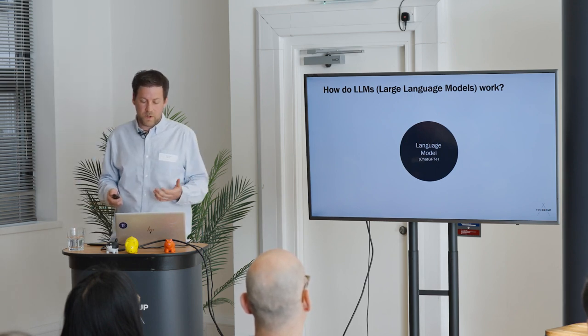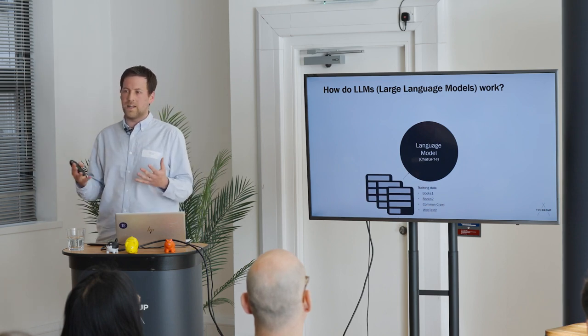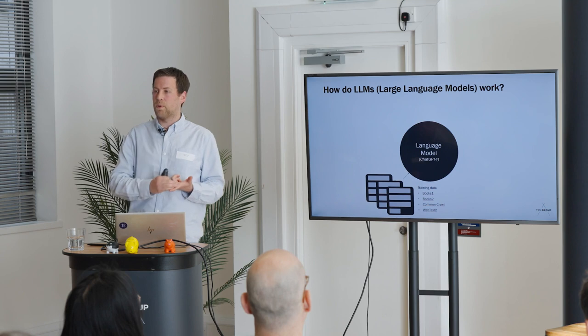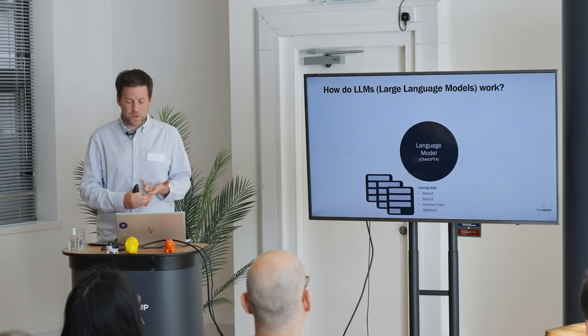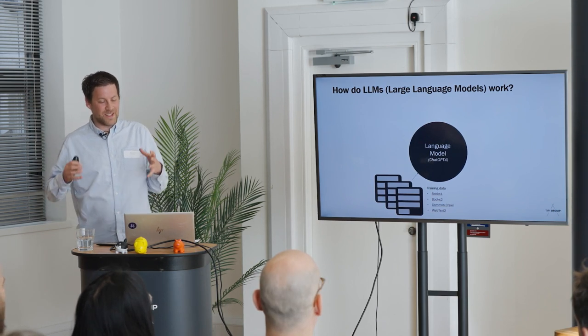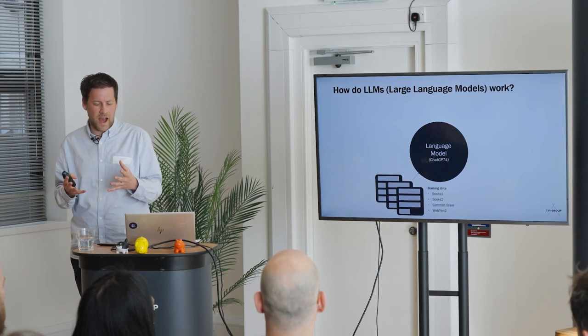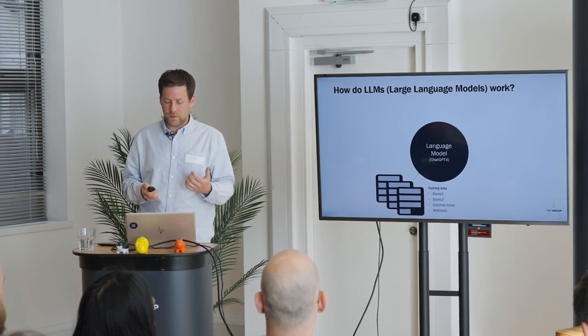A large language model has been trained by training data. It's taken a huge amount of data, which is a combination of books that have been scanned in, crawls of web pages, and a popular one is WebText2 — everything from Reddit that's got more than three upvotes goes into the system. OpenAI, the company who developed ChatGPT, has taken this training data and some other training data — a bit of a secret sauce — to create the large language model.